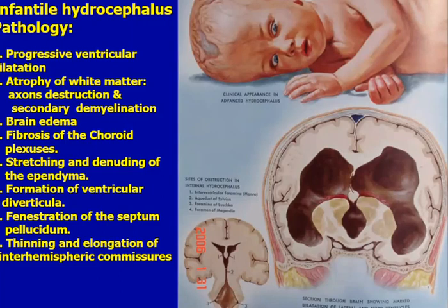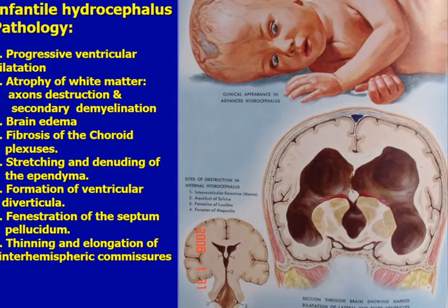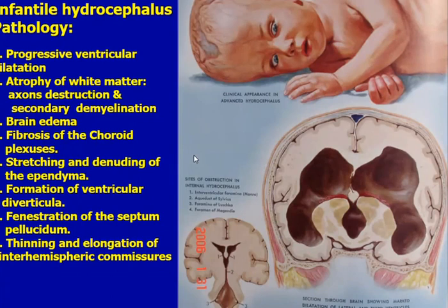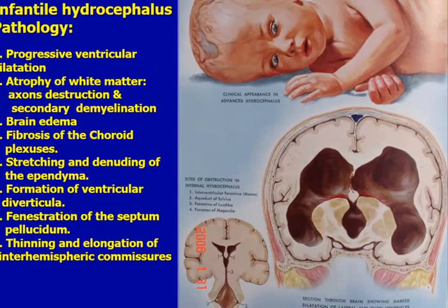Pathologically in infantile hydrocephalus, there will be progressive dilatation of the ventricles as seen in this coronal view. There will be atrophy of the white matter, axon destruction, and secondary demyelination. There will be brain edema, fibrosis of the choroid plexuses, stretching and denuding of the ependyma, formation of ventricular diverticula, fenestration of the septum pellucidum, and thinning and elongation of inter-hemispheric commissures.